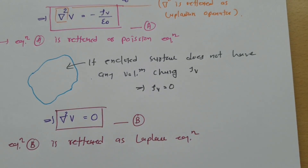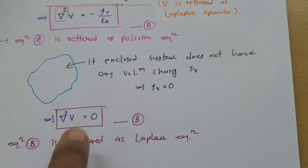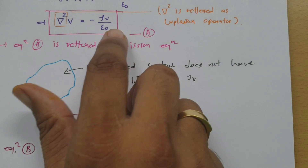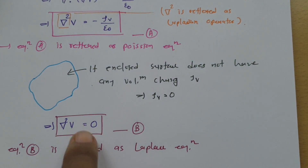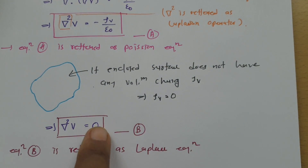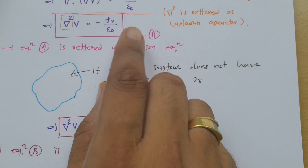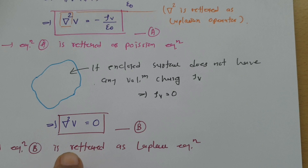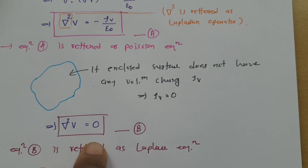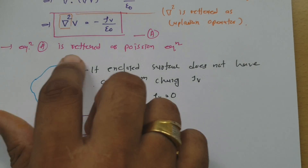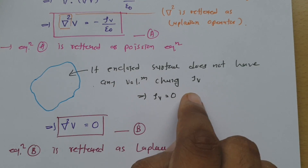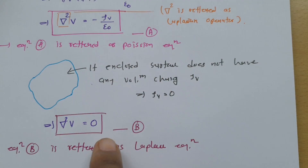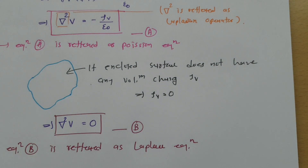There might be a question about the use of these two equations. So, del squared V equals minus rho V by epsilon 0 is Poisson's equation, and del squared V equals 0 is Laplace's equation. For Laplace's equation, the condition is that the enclosed surface should not have any volume charge — rho V equals 0 — so substituting that into Poisson's equation gives Laplace's equation.